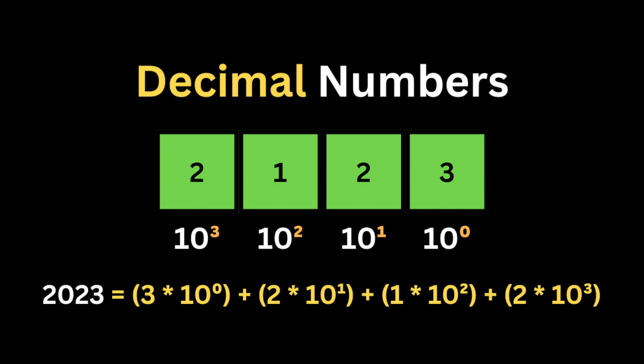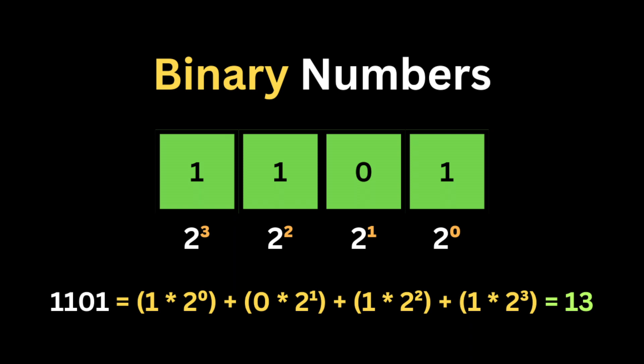Decimal numbers are represented in columns, and each column represents a power of 10. For example, the digit 3 represents three ones, or 3 multiplied by 10 to the power of zero. The digit 2 represents two tens, or 2 multiplied by 10 to the power of one. The digit 1 represents 100, or 1 multiplied by 10 to the power of two. The last digit 2 represents 2000, or 2 multiplied by 10 to the power of three.